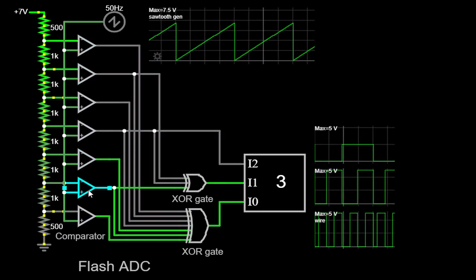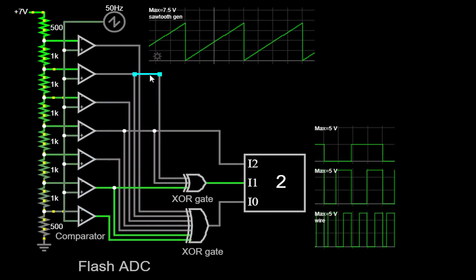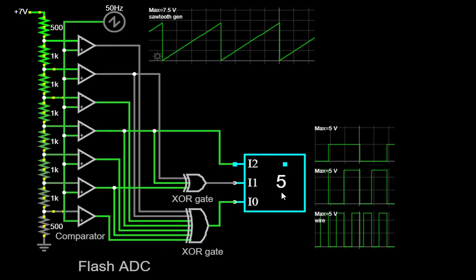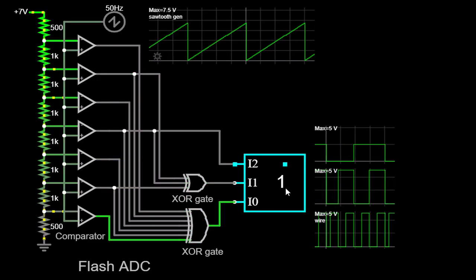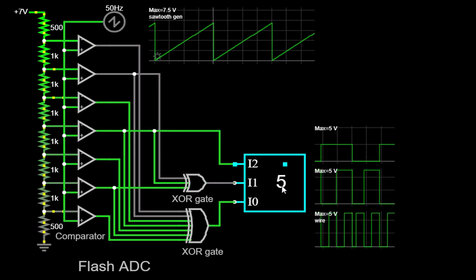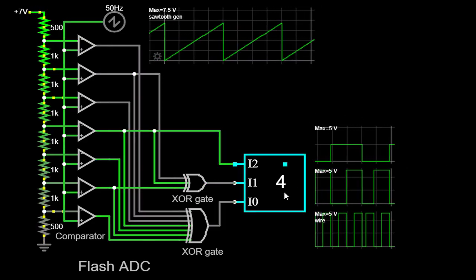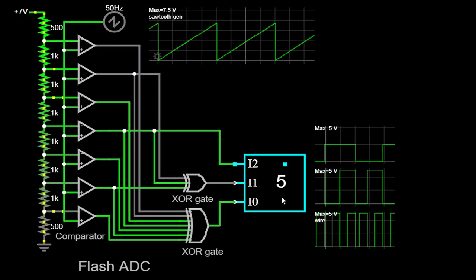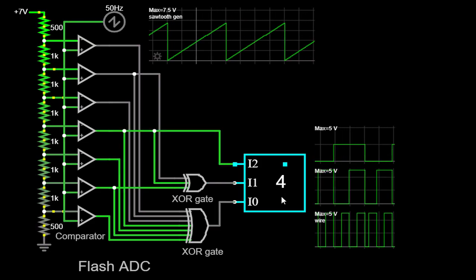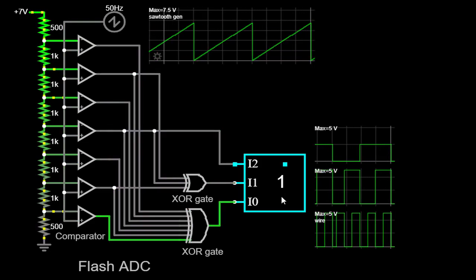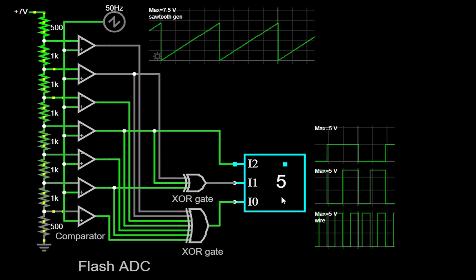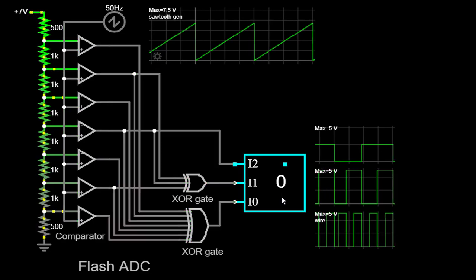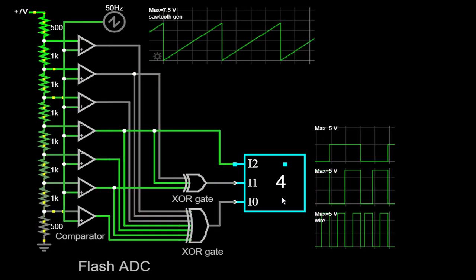These individual outputs from the comparators are then encoded to generate the final digital output of the Flash ADC, representing the analog input voltage. As we observe the simulation progress, we can witness the digital output of the Flash ADC changing rapidly in response to the sawtooth waveform. The speed and accuracy of the Flash ADC's operation allow it to provide a high-resolution digital representation of the analog input signal. This capability makes the Flash ADC valuable for a broad range of applications that demand fast and precise analog-to-digital conversion,